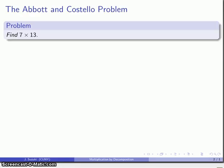Let's take a look at multiplication and we'll start out with what I call the Abbott and Costello problem. Find 7 times 13. You might wonder why it's called the Abbott and Costello problem. You can Google it. It's actually a rather entertaining little skit.